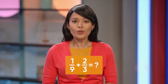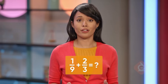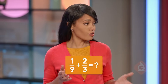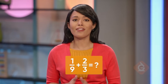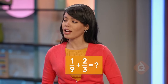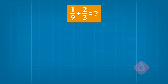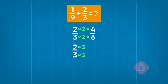Since 2/3 has a smaller denominator, why don't you start by finding equivalent fractions for it? Well, if we multiply the numerator and denominator by 2, it becomes 4/6. And if we multiply the numerator and denominator by 3, we get 6/9.